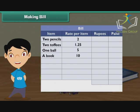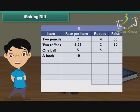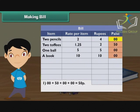2 pencils cost 4 rupees, so write 4 in the rupees column and 00 in the paise column. 2 toffees cost 2 rupees 50 paise, so write 2 in the rupee column and 50 in the paise column. 1 ball costs 5 rupees. 1 book costs 10 rupees, so write 10 in the rupees column and 00 in the paise column. Add 00 plus 50 plus 00 plus 00, which is equal to 50 paise.